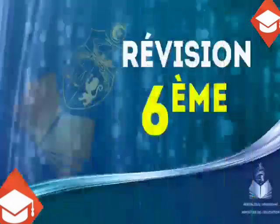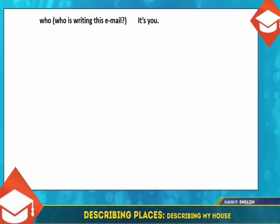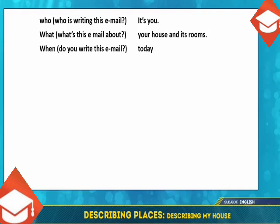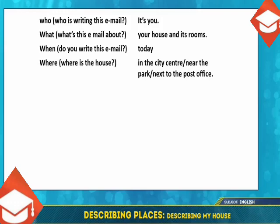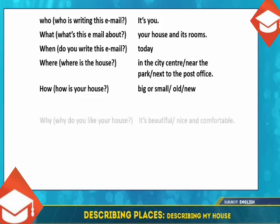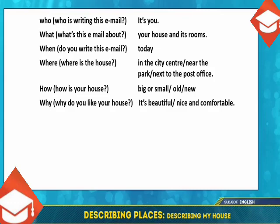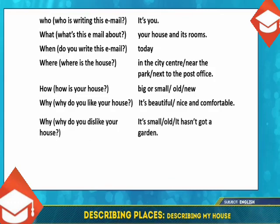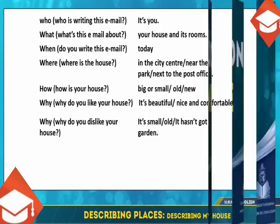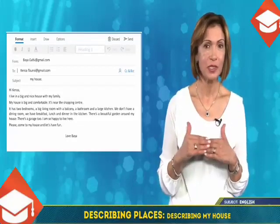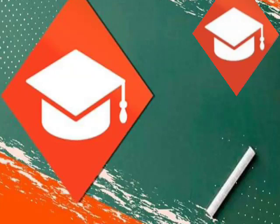Let's see together: who is writing this email? It's you. What's the email about? Your house and its rooms. When do you write it? Today. Where is your house — in the city center, near the park, next to the post office? How is your house — big, small, new, or old? Why do you like it? Because it's beautiful, nice, comfortable. Or why don't you like it — maybe it's small, it's old, it hasn't got a garden. This is an example email — read it. You can imitate the text or add more details. Hope you find these tips helpful. Thank you for watching and see you next time.